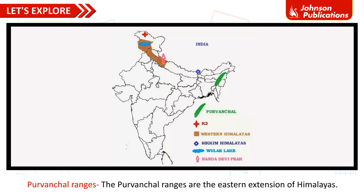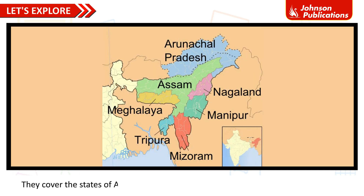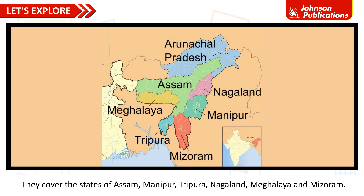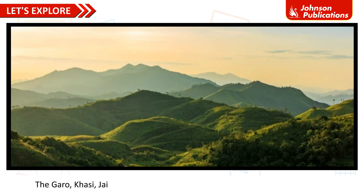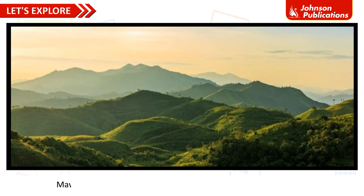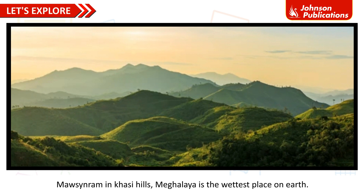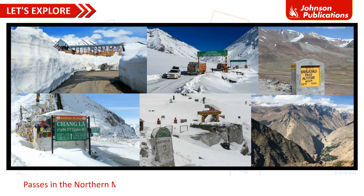The Purvanchal Ranges are the eastern extension of the Himalayas. They cover the states of Assam, Manipur, Tripura, Nagaland, Meghalaya, and Mizoram. The Garo, Khasi, Jaintia, Naga, Mizo, and Lushai are the main hills in this range. Mawsynram in the Khasi Hills, Meghalaya, is the wettest place on earth.